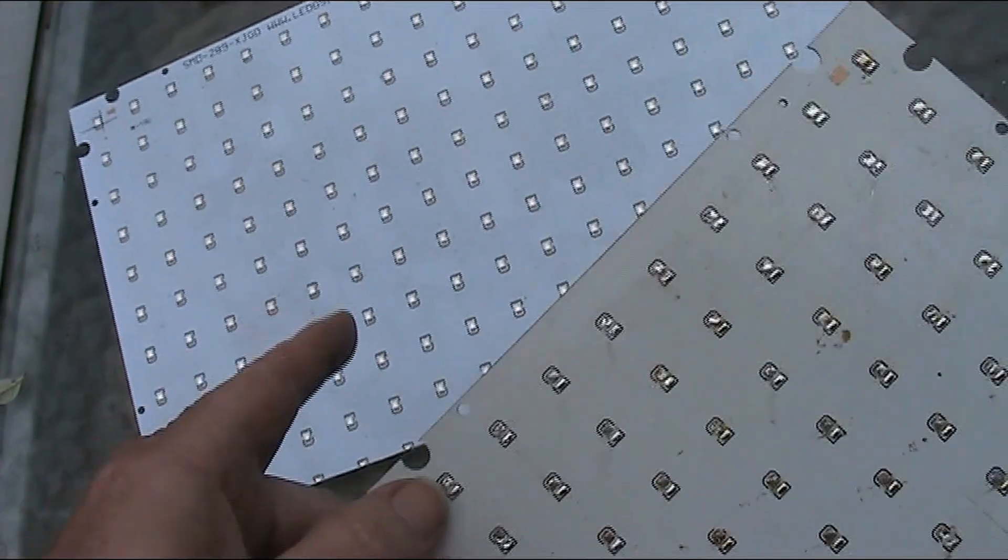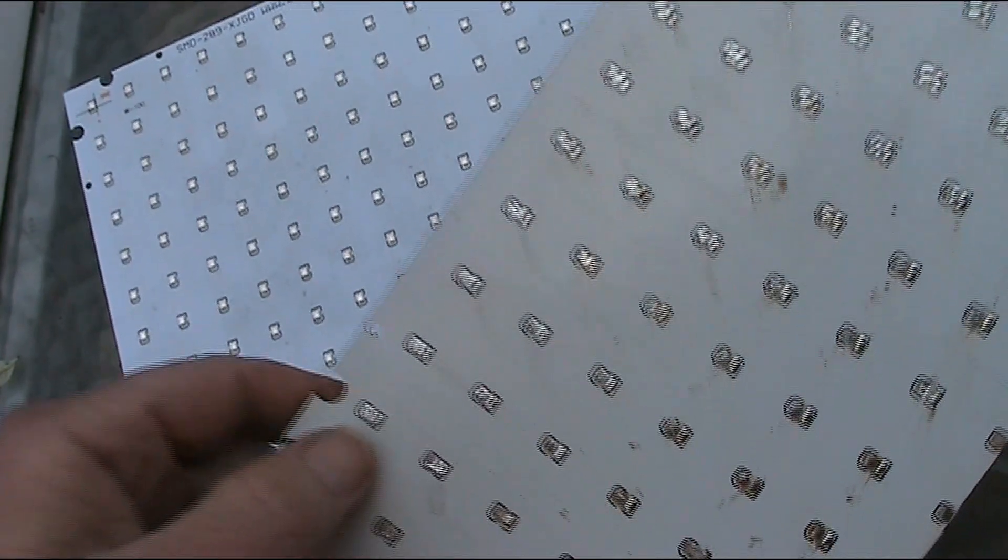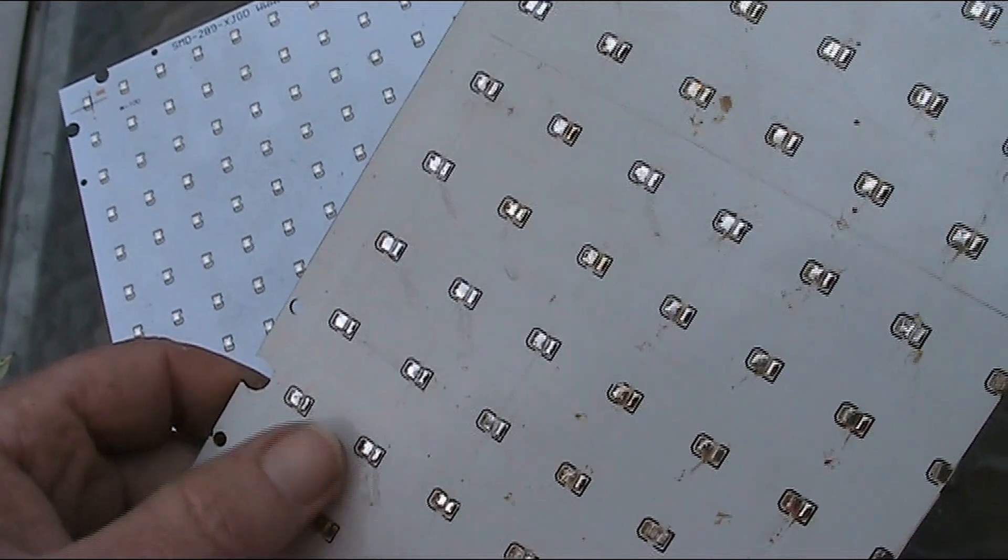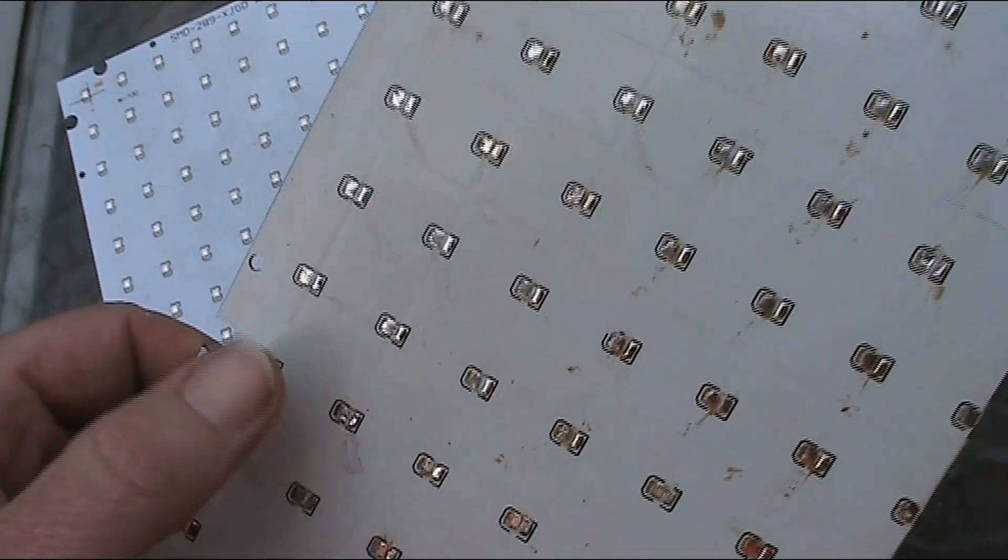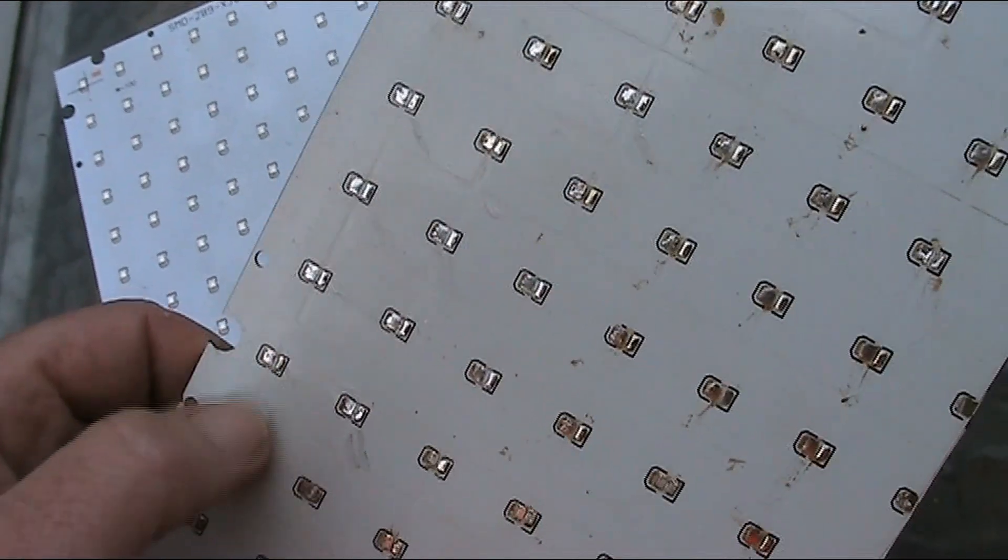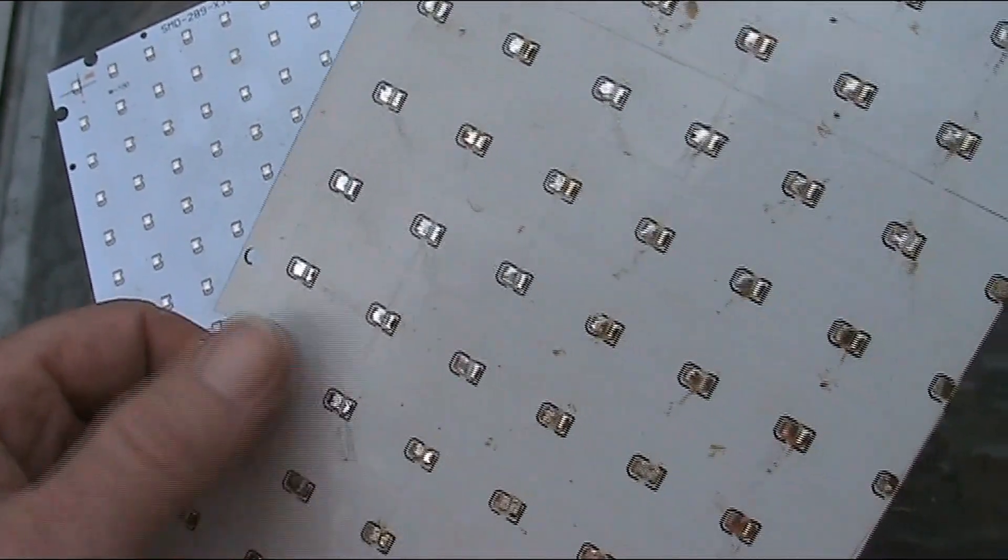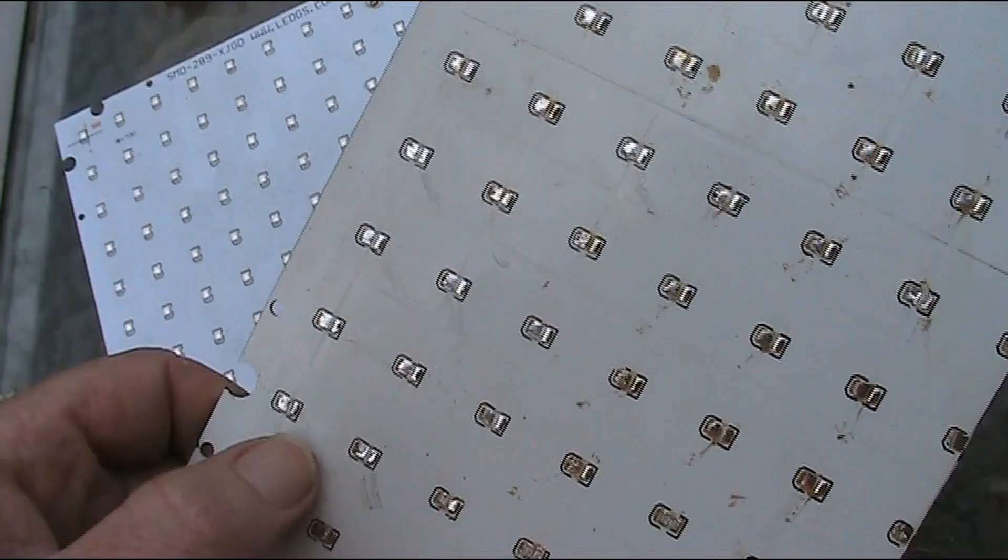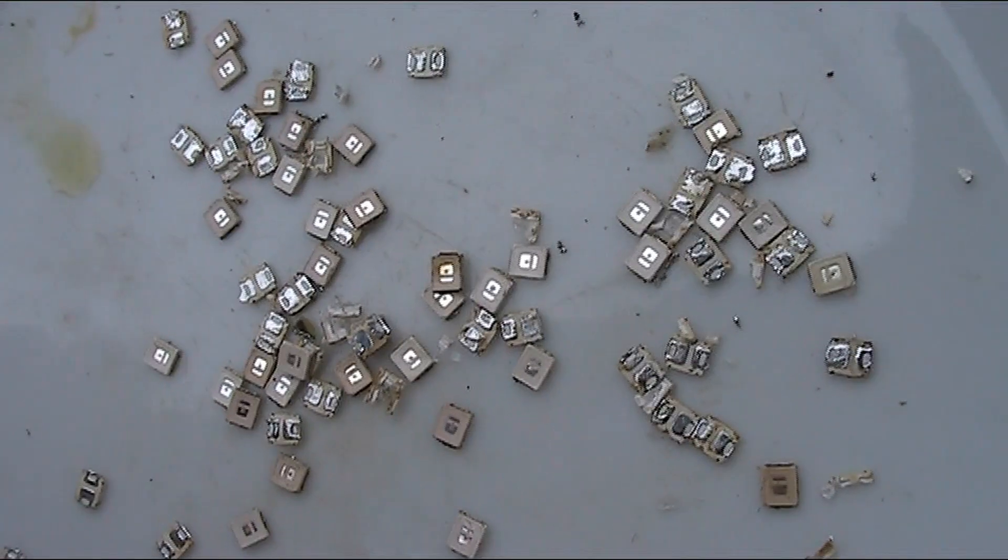What I did was I put the whole sheet on a baking tray in an oven on maximum for maybe 15-20 minutes. It got very very hot so you could very easily just move the LEDs off and tip them into a bowl. And so that's what I've got. A whole lot of surface mount LEDs.